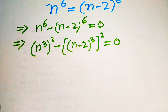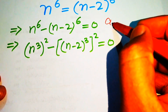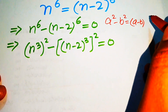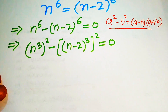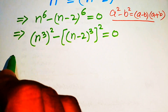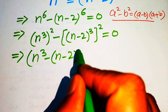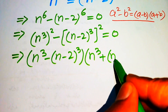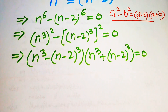In the next step we use the difference of squares identity. We know that a squared minus b squared equals a minus b times a plus b. Applying this identity to the left hand side, we write the equation as n cubed minus n minus 2 cubed, times n cubed plus n minus 2 cubed, equals to 0.